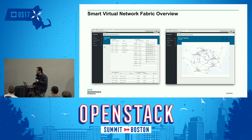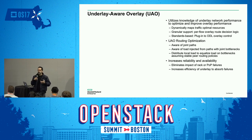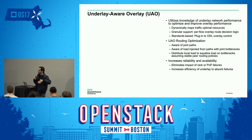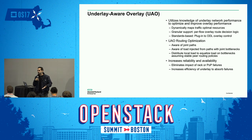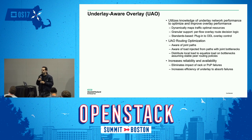We end up with this underlay-aware overlay technology where we take measurements at the overlay and use this information to decide which POPs should serve specific traffic flows in the network. This routing optimization is aware of joint paths — and given that we can infer what's happening in the underlay, we can identify which paths cross each other on the underlay and try to avoid them whenever possible. If it's not possible to avoid them, this guides us in creating new service function chains on alternative paths.